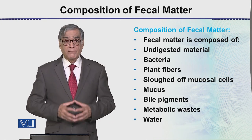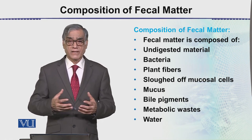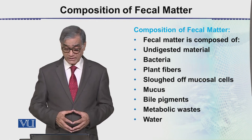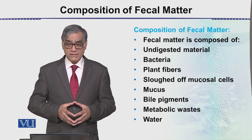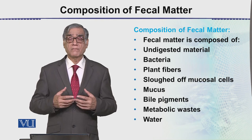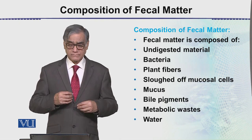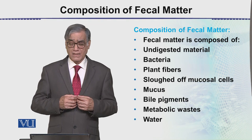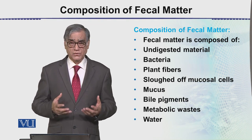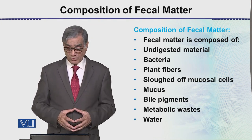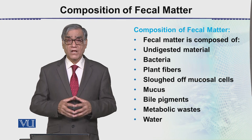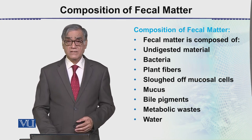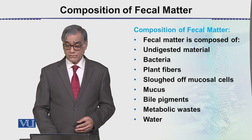Then there are bile pigments, which come from the liver and they also mix with the fecal matter. Then there is metabolic waste, which remains undigested and remains as such — we call it metabolic waste. And finally there is water. So this is the composition of the fecal matter.